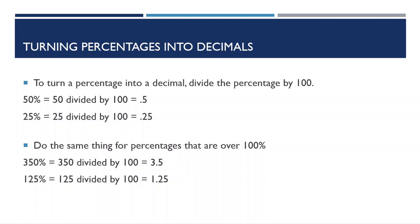You can do the same thing for percentages that are over 100%. This will just give you a decimal that has a whole number first. So 350% would be 350 divided by 100, which equals 3.5. And 125% would be 125 divided by 100, which equals 1.25.